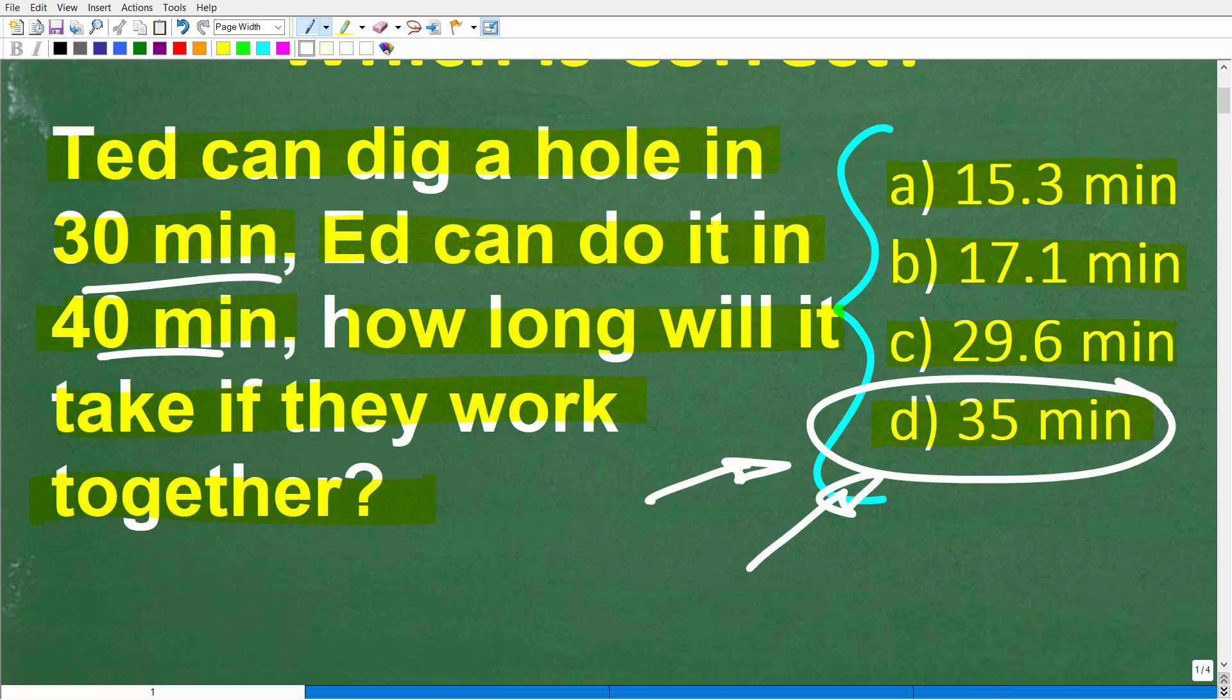This is probably the very likely wrong answer that a lot of people would have selected. But does this make sense? Think about it. If Ted can dig the hole all by himself in 30 minutes, and then he has a whole other person to help him out, you'd think they're only going to save five minutes, or actually it's going to take him longer than he can do by himself. So the average here doesn't make sense.